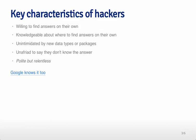They're knowledgeable about where to find those answers — whether it's Google, Stack Overflow, Cross Validated, or the message history of a mailing list. They're unintimidated by new data types or packages. It's very common as a data scientist to be thrown a new kind of data or a new R package that you need to learn quickly to analyze some data. And they're unafraid to say they don't know the answer. The way to summarize it is: being polite but relentless — going after the answer while being very polite while doing it.